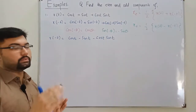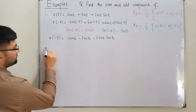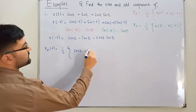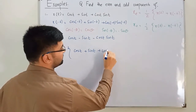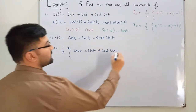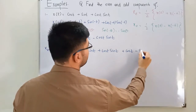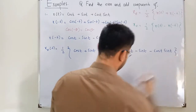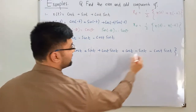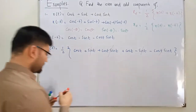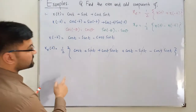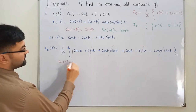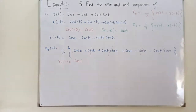For the even component, x_e(t) = ½[x(t) + x(-t)] = ½[(cos(t) + sin(t) + cos(t)sin(t)) + (cos(t) - sin(t) - cos(t)sin(t))]. The sin(t) terms cancel and the cos(t)sin(t) terms cancel, leaving ½ · 2cos(t), so x_e(t) = cos(t).